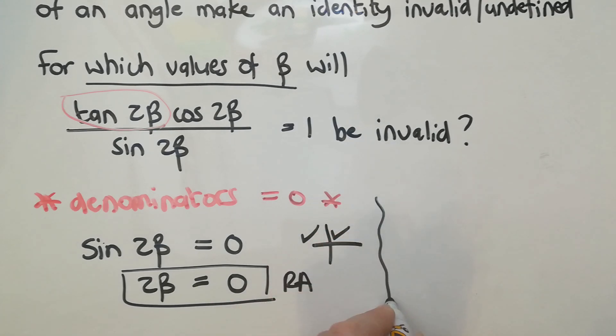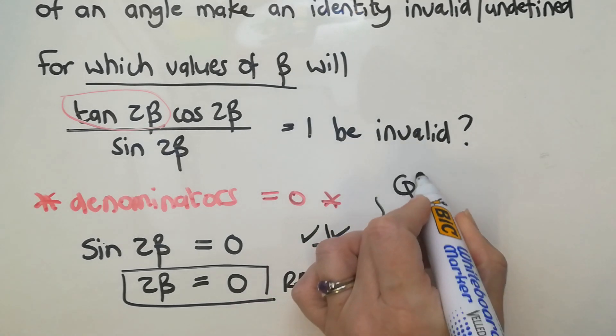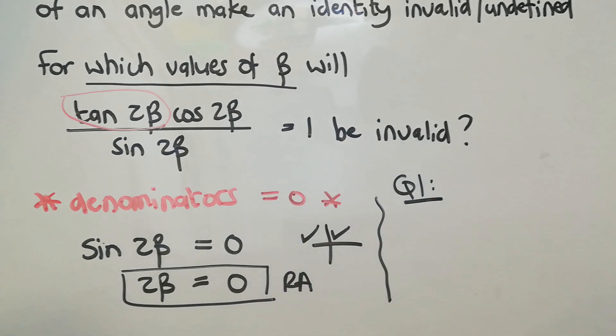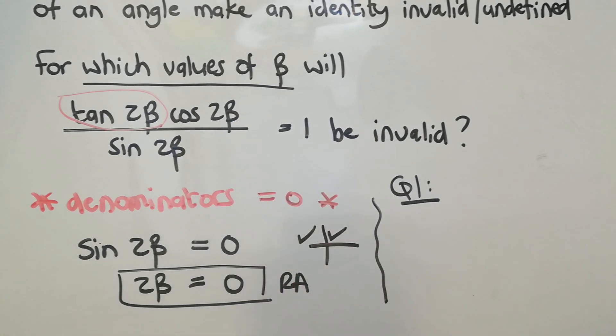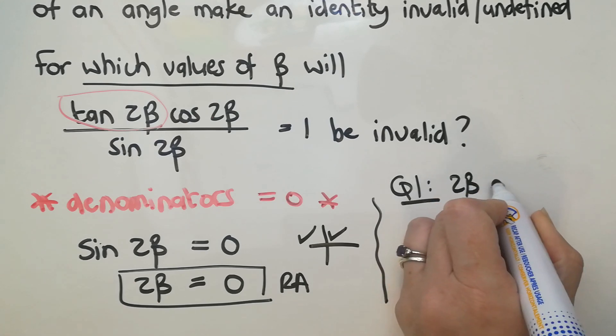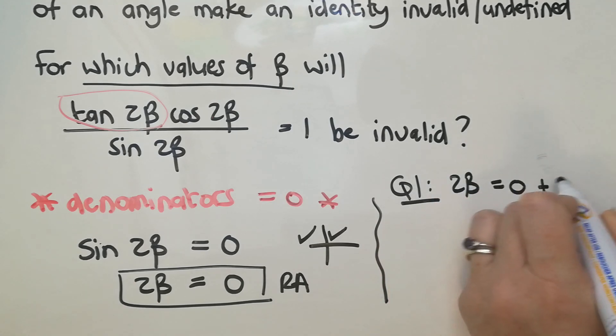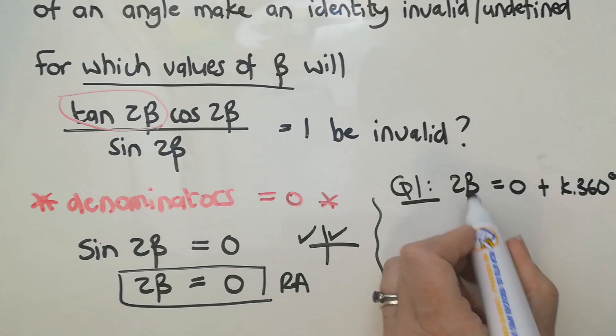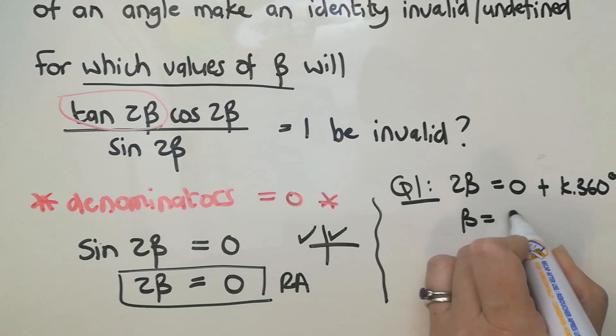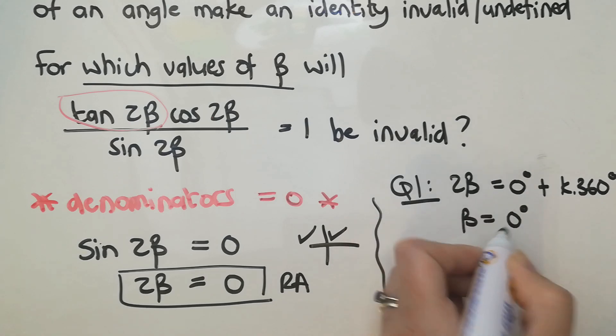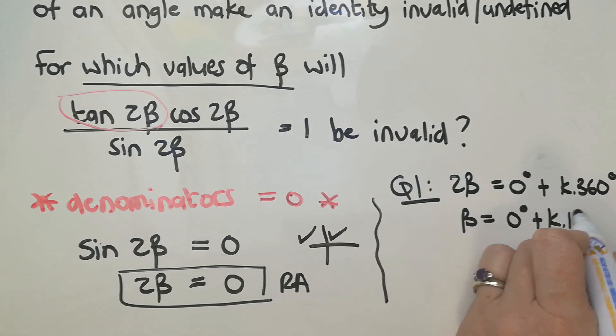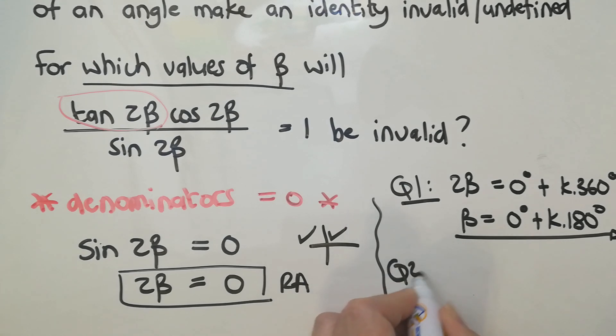That is my reference angle and then I move into the quads. So I'm going to say in quad 1, I've got 2β equals 0 plus k360 degrees, and that will mean that β equals 0 plus k180.